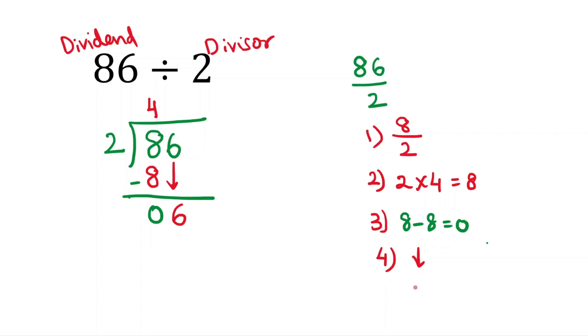So again the fifth step is you have to repeat the steps again. That means you have to divide. That means 6 by 2. How many times of 2 makes 6? 2 times 3 is 6. So you have to write 3 here. 2 times 3 is 6. Again subtract. 6 minus 6 is 0.